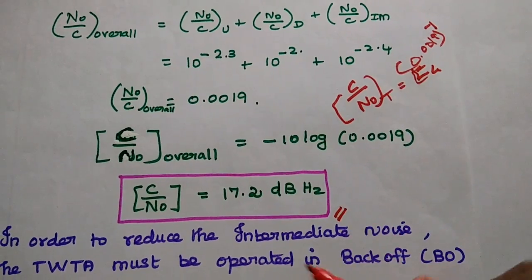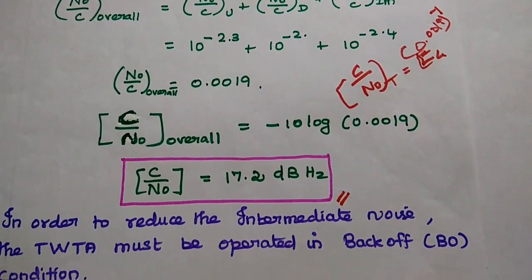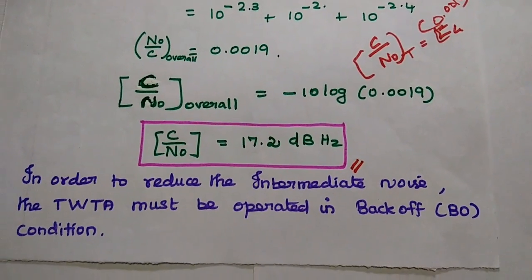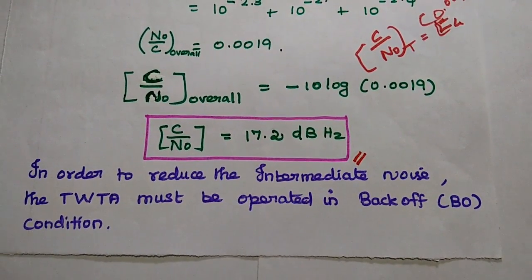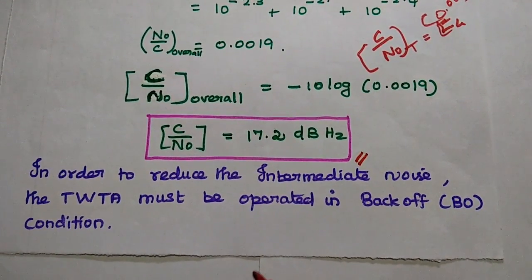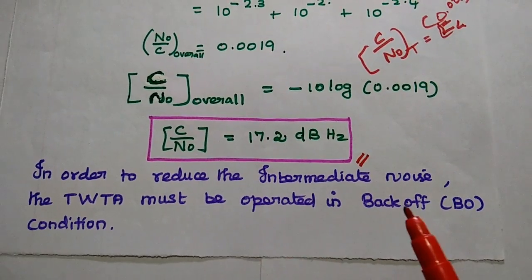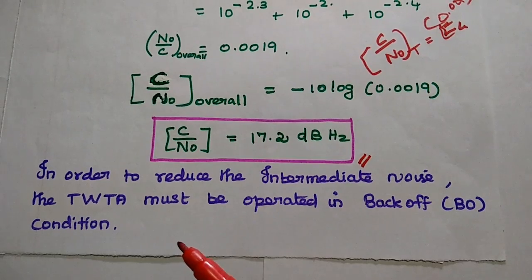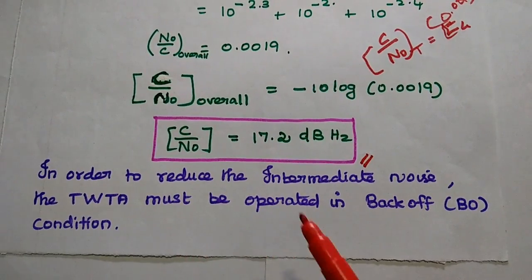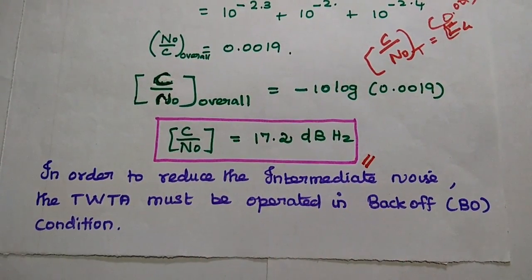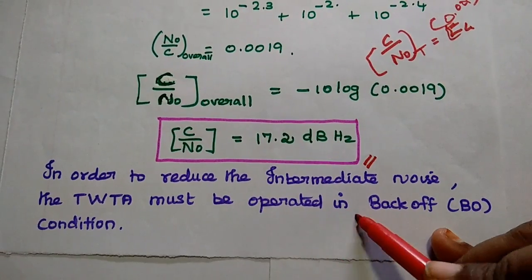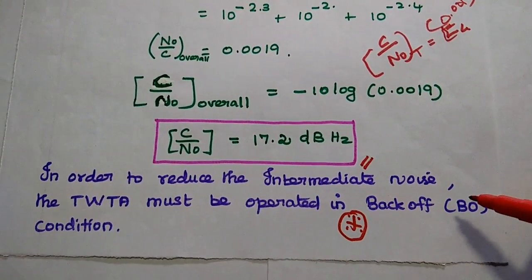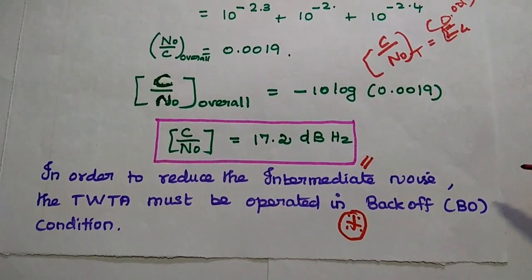To reduce the intermodulation noise, the traveling wave tube amplifier (TWTA) must be operated in back-off condition on the receiver side. This is a very important condition to reduce intermodulation noise in a satellite receiver link.